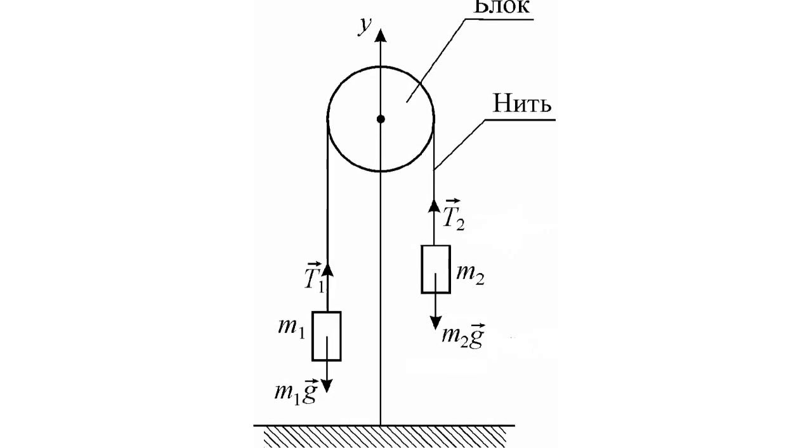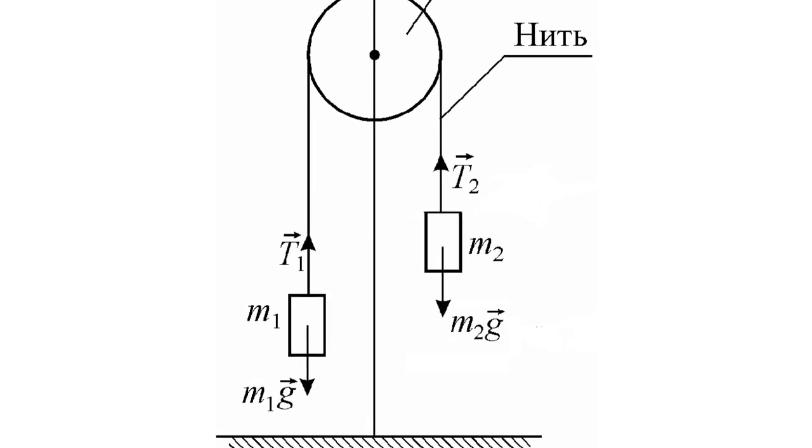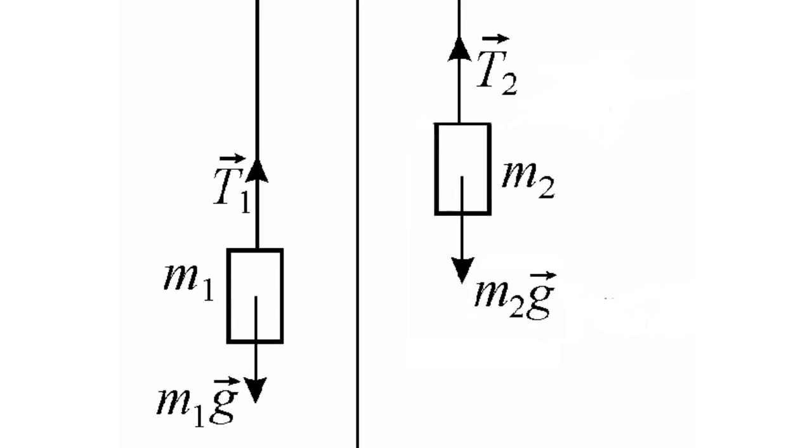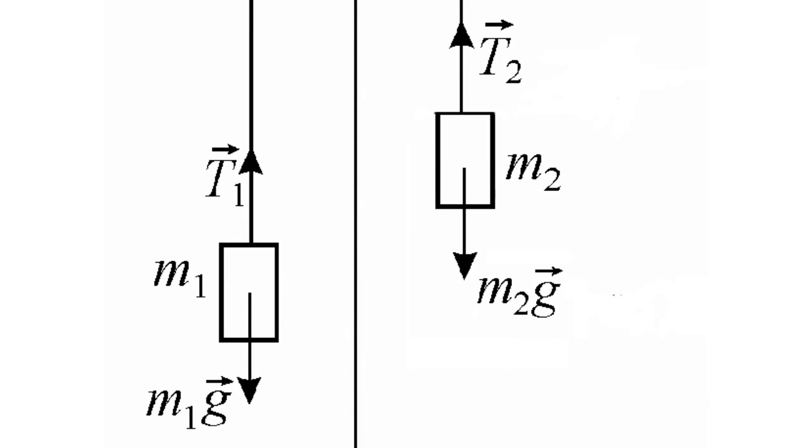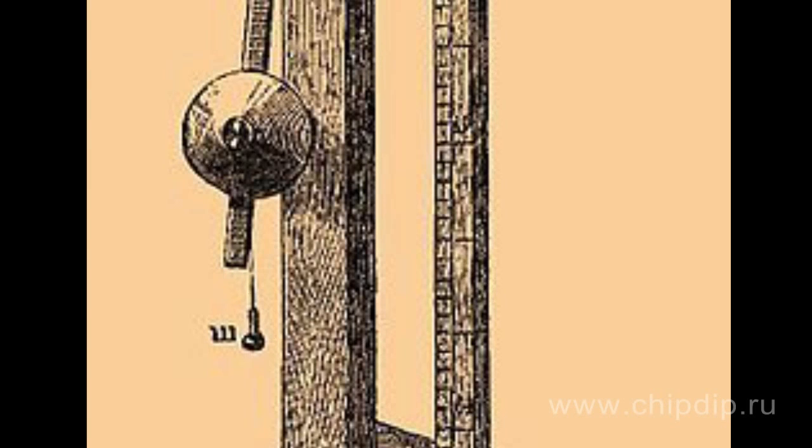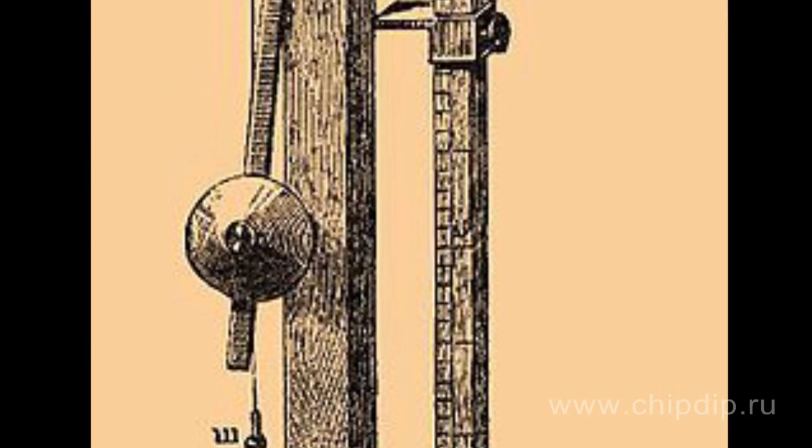Ideally, the Atwood machine is made up of two weights interconnected by a non-extensible zero-weight string through a frictionless pulley. Weights of equal mass are balanced. Differences in mass cause the weights to move with linear acceleration.